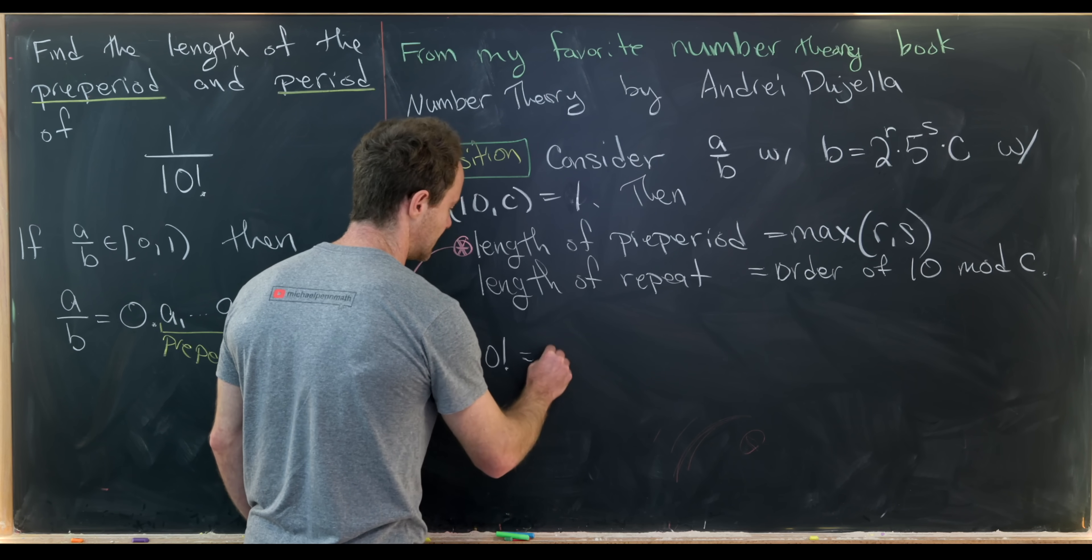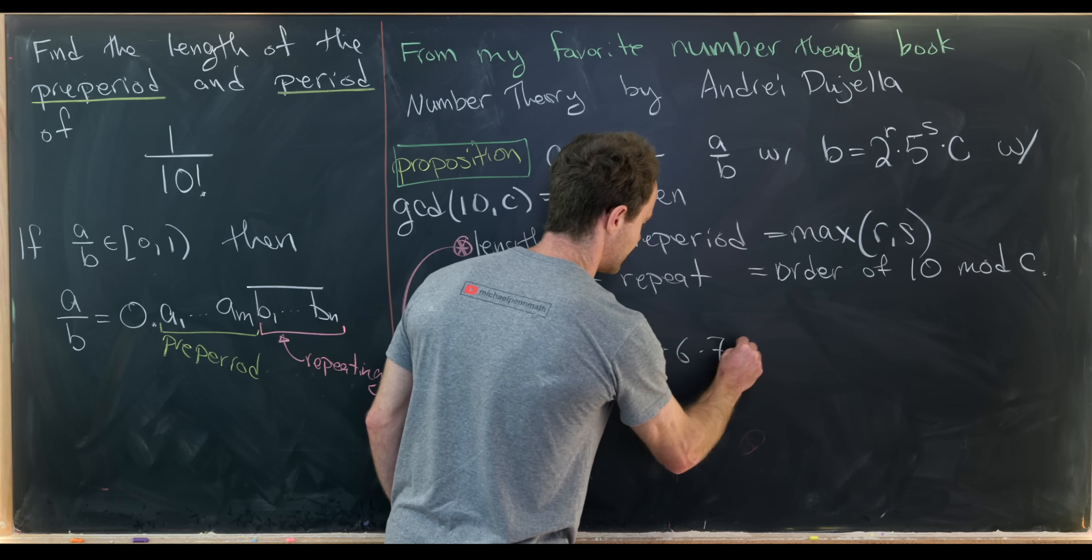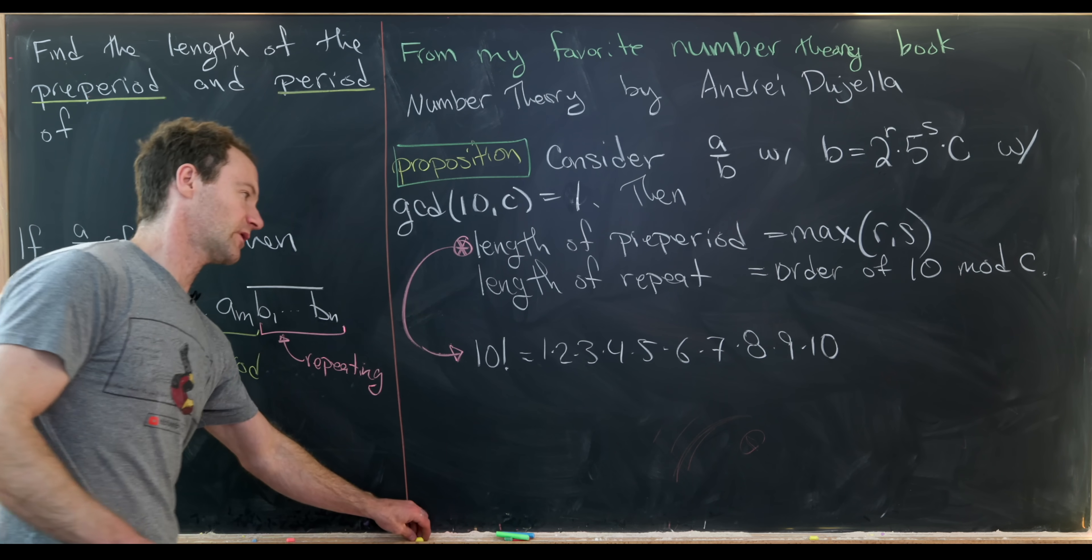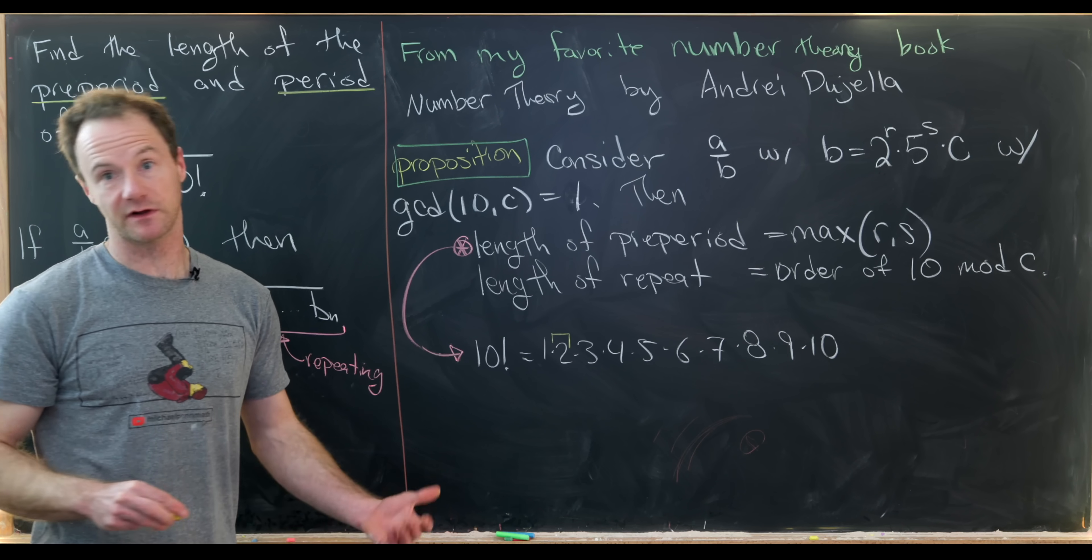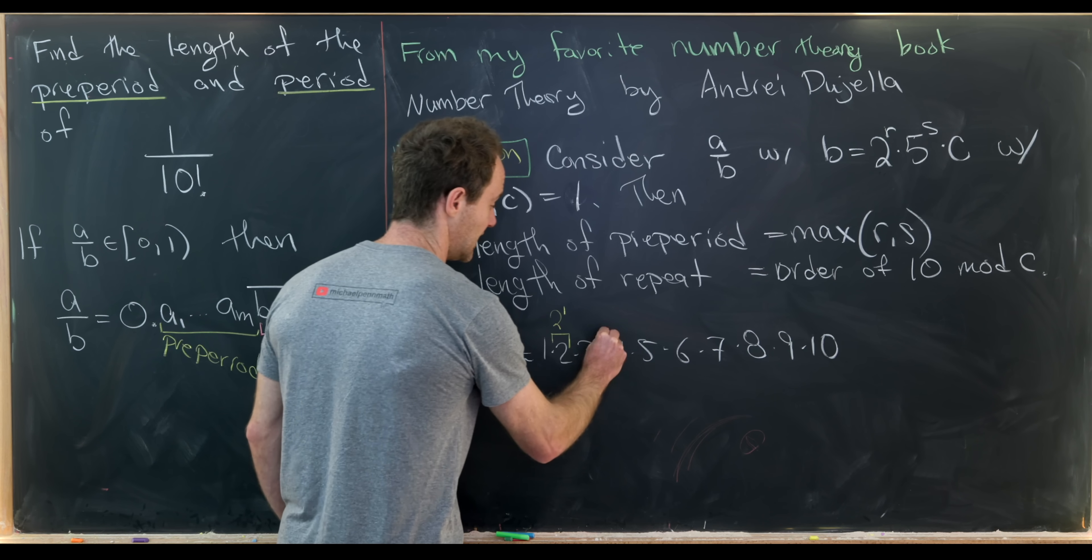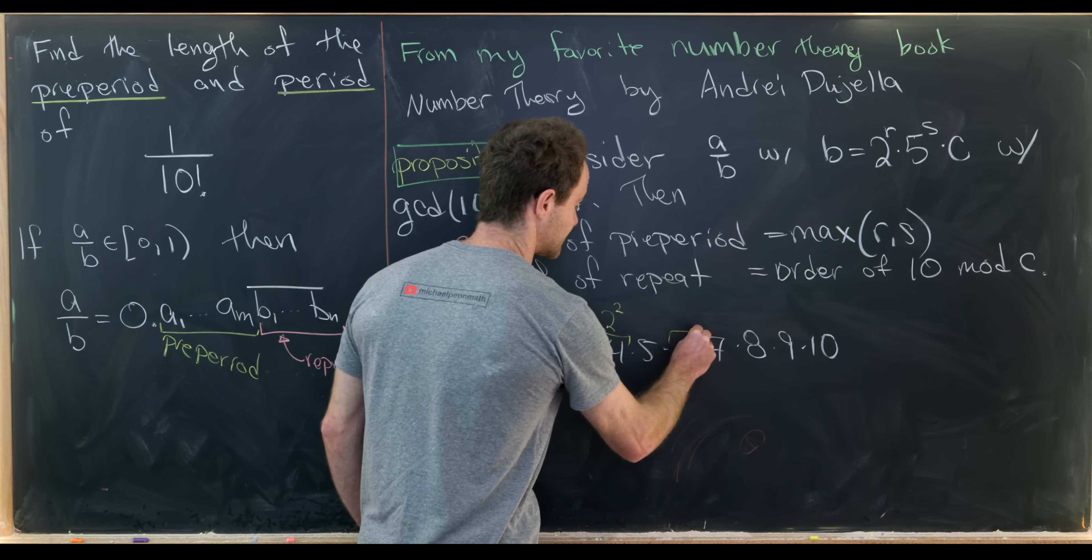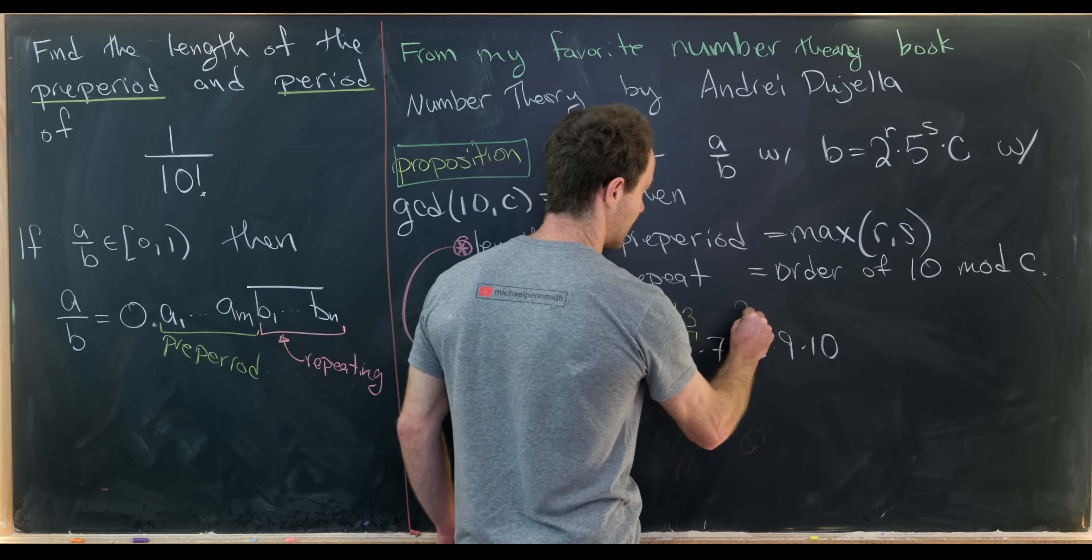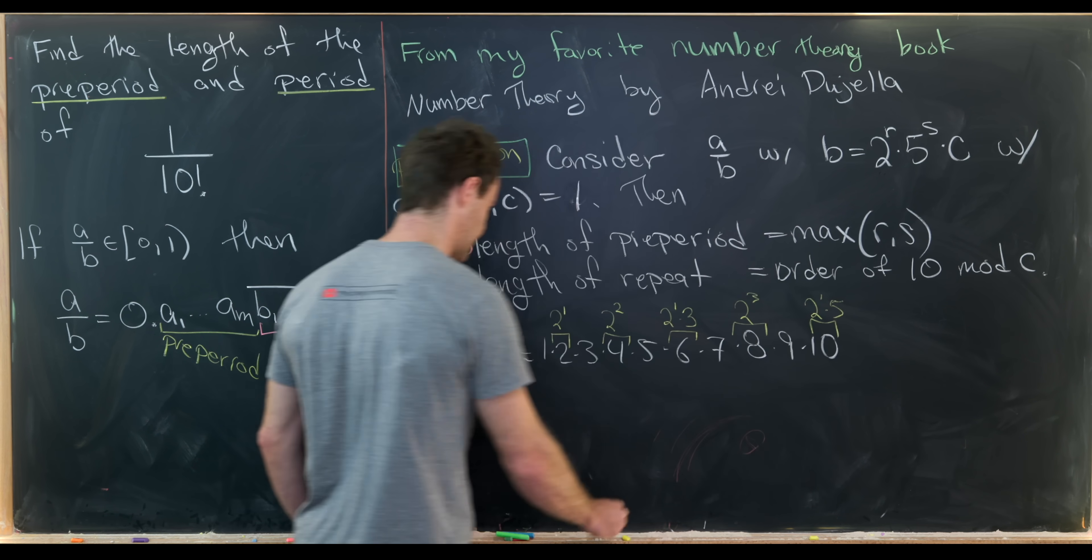So 10 factorial is clearly equal to 1 times 2 times 3 times 4 times 5 times 6 times 7 times 8 times 9 finally times 10. Now what I'll do is just kind of highlight where I get powers of 2. So I get a power of 2 clearly from 2. I in fact get 2 to the 1 here. Here with this number 4, I'll get 2 to the 2. Here with this number 6, I'll get 2 to the 1 times 3. Here with this number 8, I'll get 2 cubed. And with the number 10, I'll clearly get 2 to the 1 times 5.